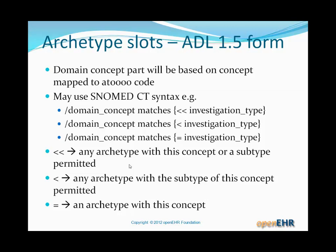So in this example, investigation type — that archetype or any child archetype that might exist. The second operator is just the less-than sign, which means any archetype with the subtype of this concept but not that concept. That's useful when you really want any of the specific children but not a more abstract parent. And of course, equals does a direct match on an archetype corresponding to a particular concept.